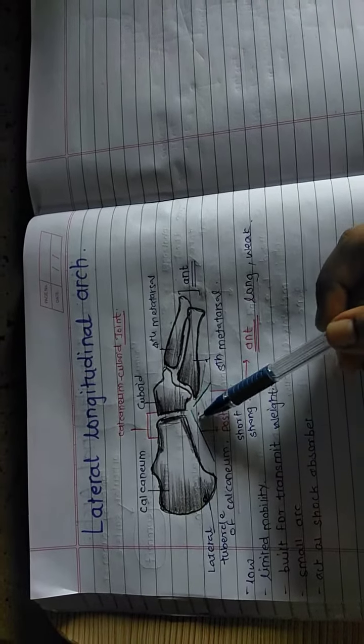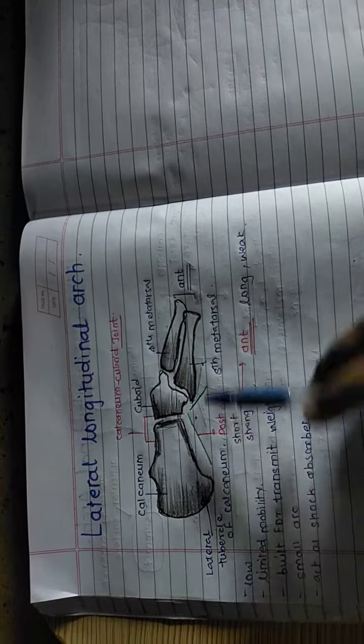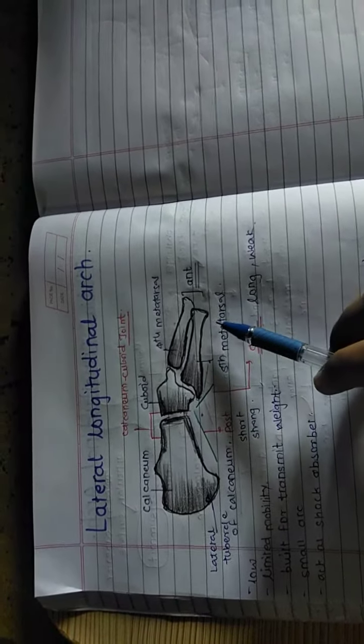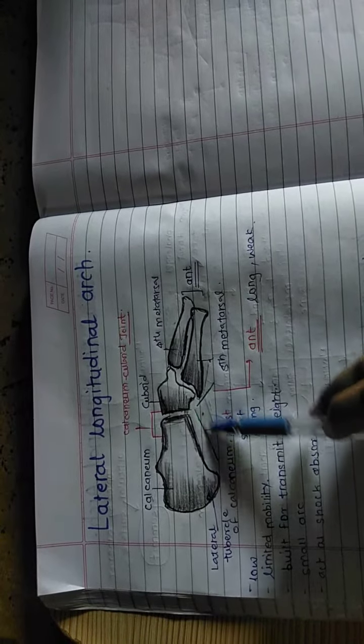There are the two pillars, posterior and the anterior pillar. Anterior pillar is the long and the weak. Then the posterior pillar is the short and the strong.